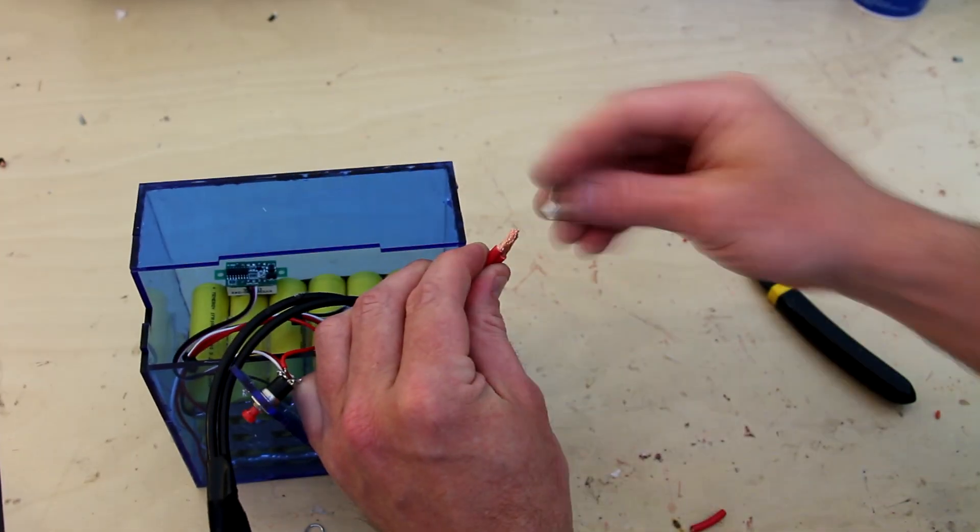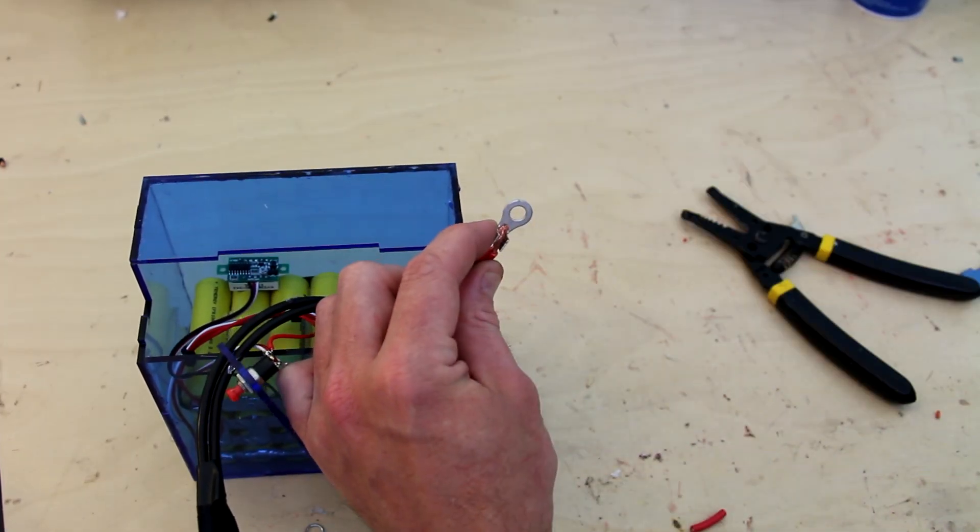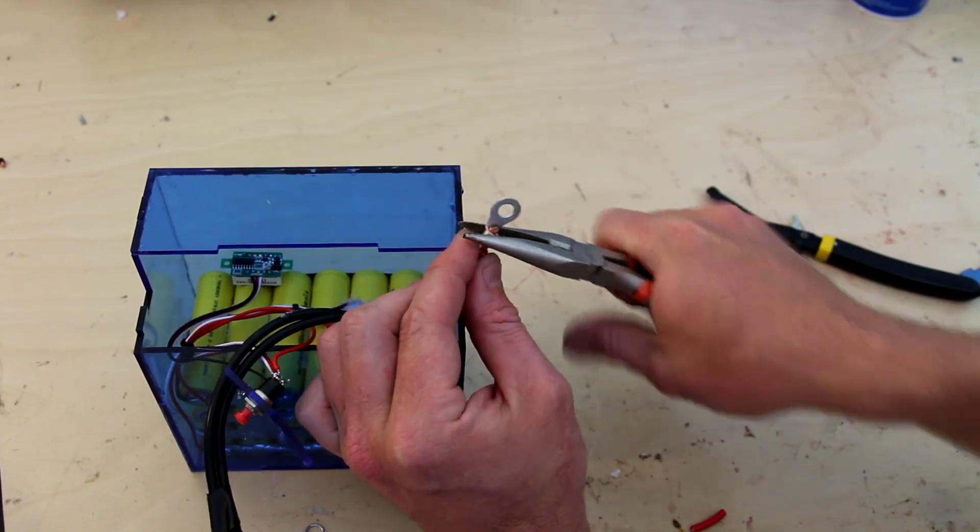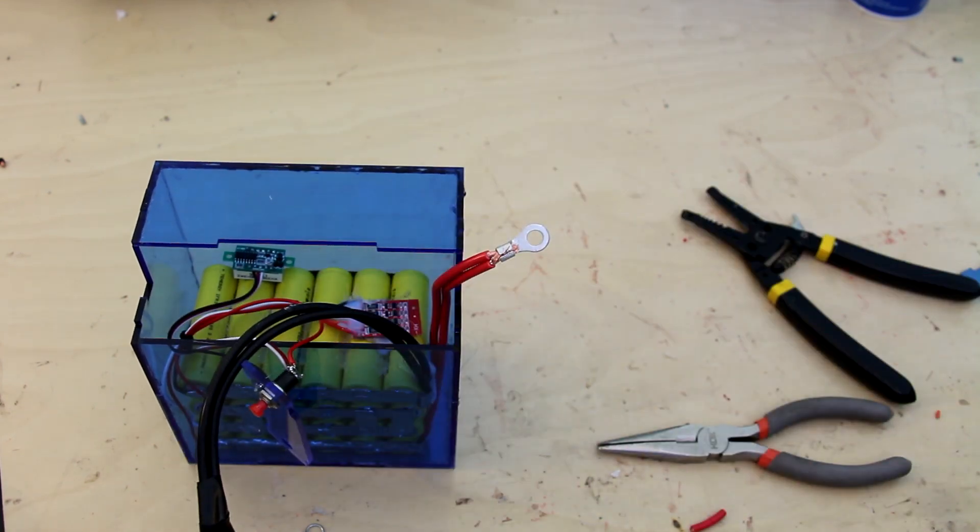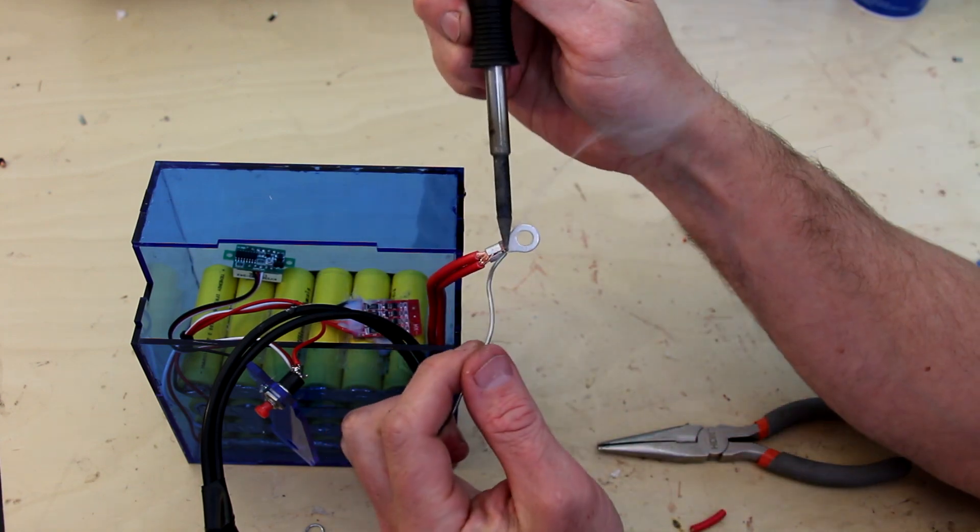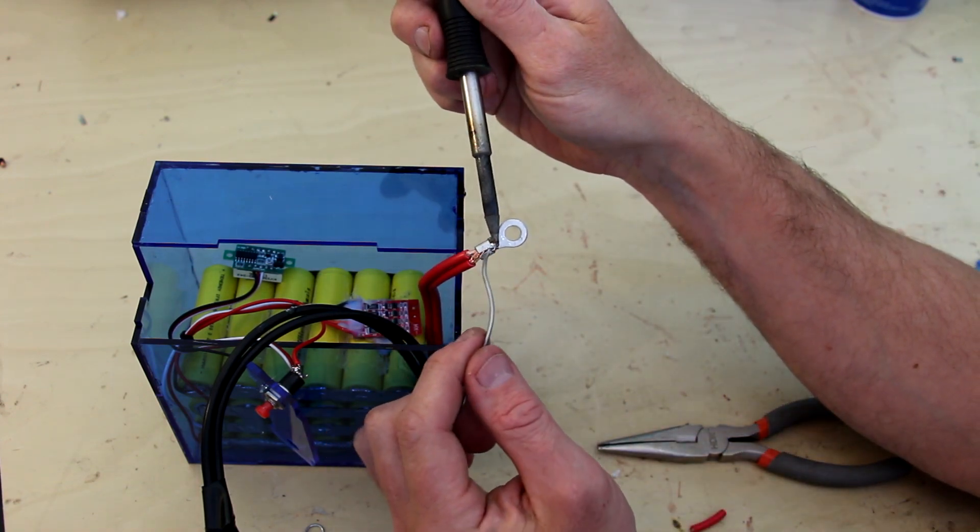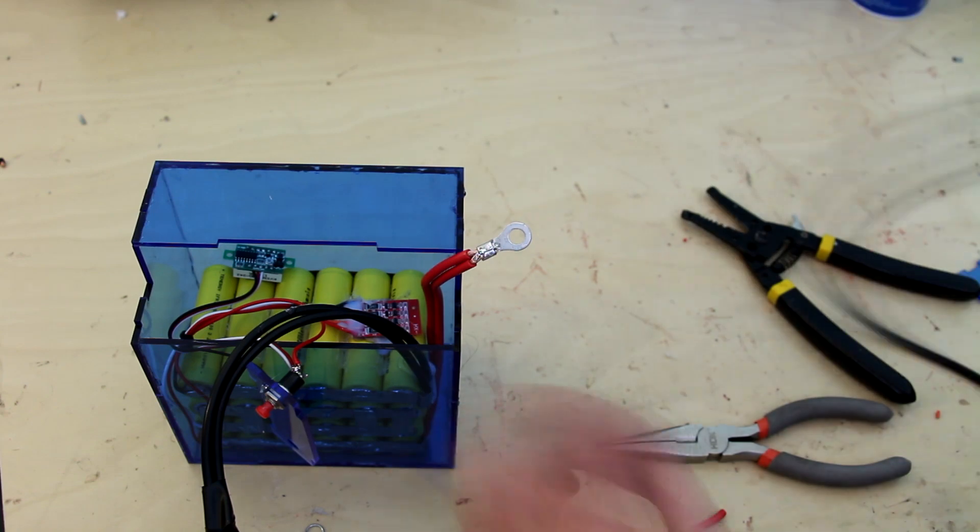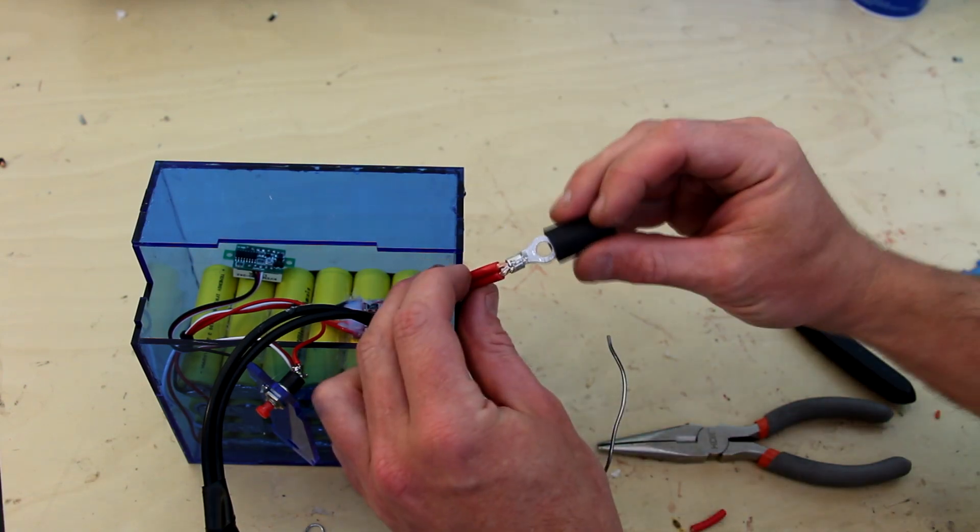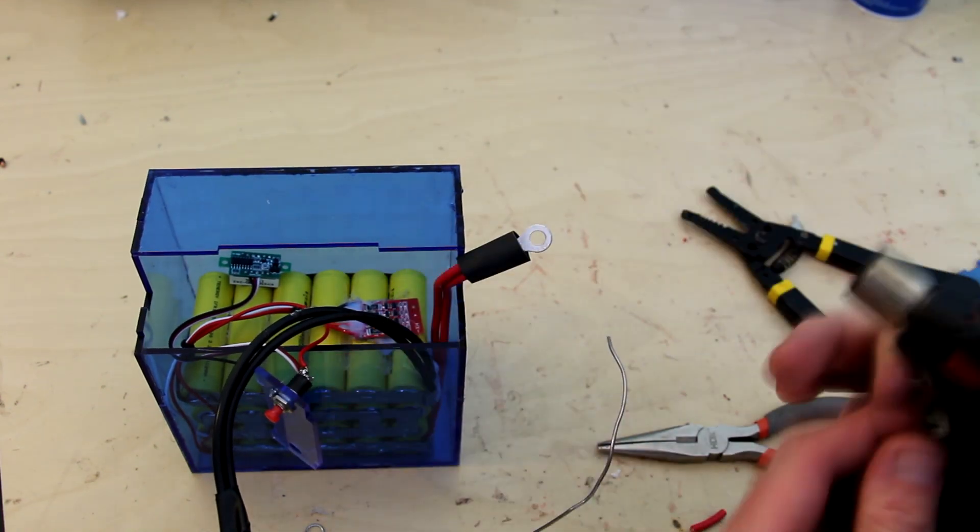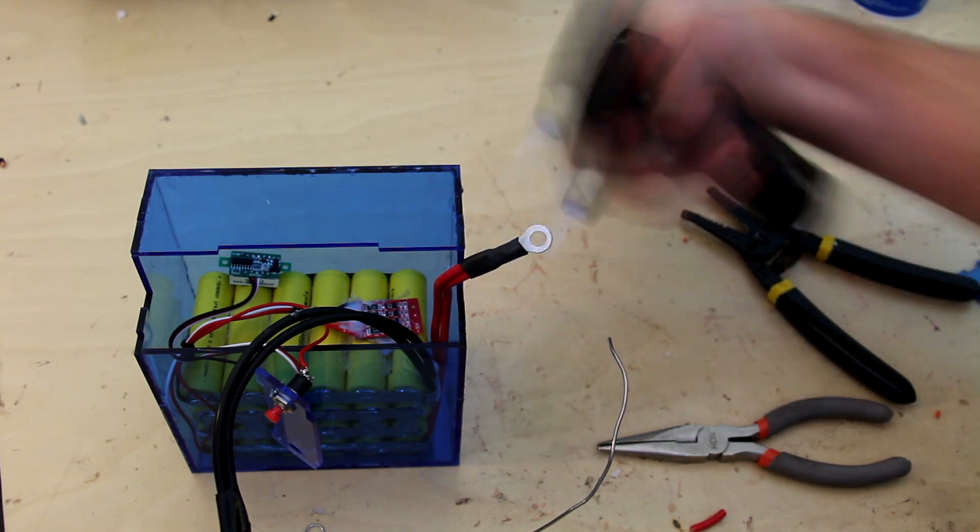Rather than crimping it in place, it's a much better connection to solder it in place. Most ring terminals are tin plated and thus they accept solder relatively easily. Just heat it up as much as you need. Unlike the batteries inside, you can heat up a ring terminal more than hot enough. Then just to be sure I don't get a short, I add a little bit of heat shrink tubing.